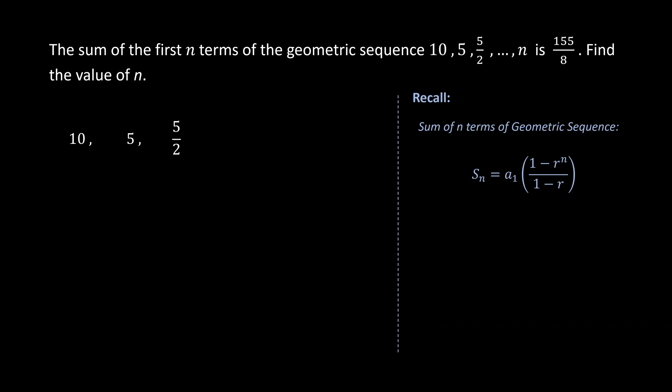From the first three terms, we know that the first term is 10. To find the common ratio, we can divide a2, which is 5, by the first term, 10, to get 1 over 2.